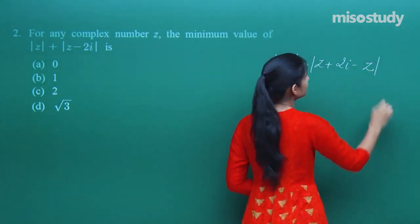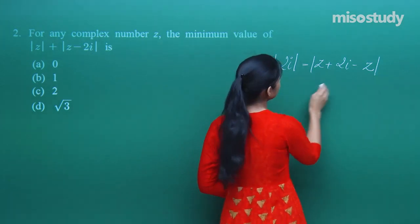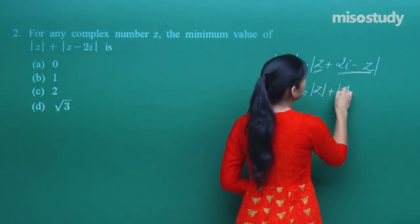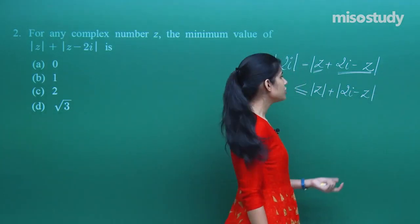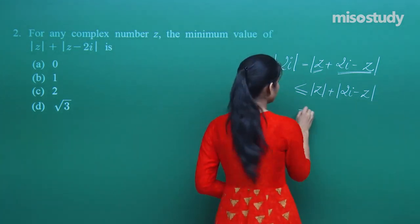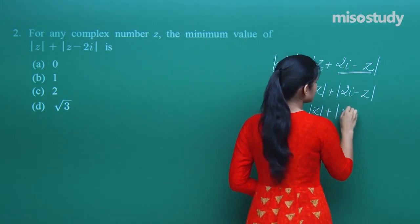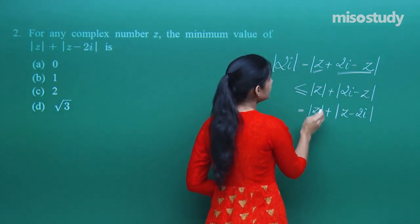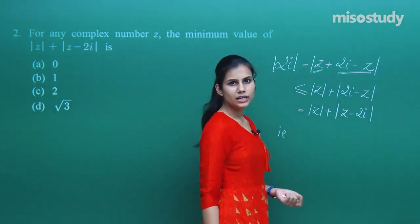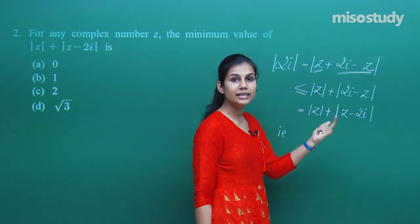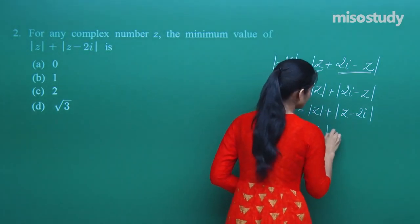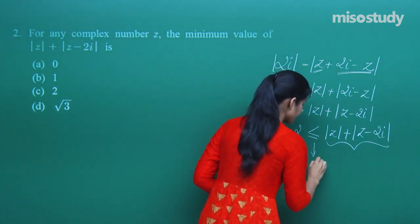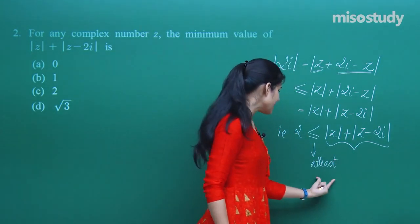The magnitude of this is the same as the magnitude of that expression. If two complex numbers are equal, their moduli are the same. Considering the two parts, I can write this as less than or equal to mod z plus mod of 2 iota minus z. Since modulus of z and its negative is the same, this becomes mod z plus mod of z minus 2i. Modulus of 2 iota is 2, since modulus of iota is 1. So the expression is less than or equal to mod z plus mod of z minus 2 iota, meaning this expression is at least 2.